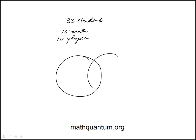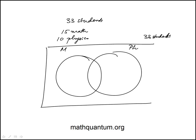So this is a Venn diagram problem, anytime you see an overlap. So math, physics, total is 33 students. And there may be some that are enrolled in neither. So that total is 33.